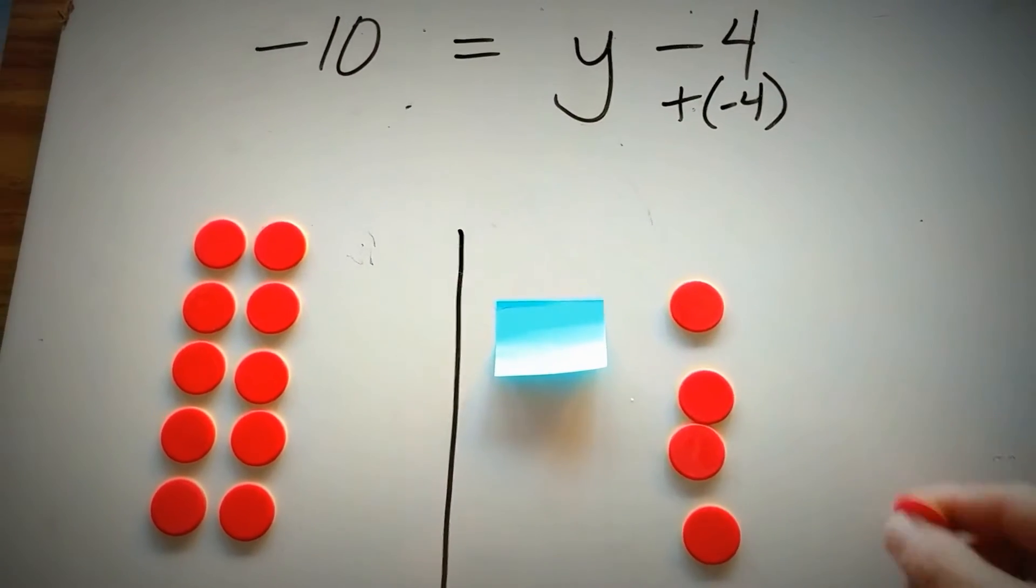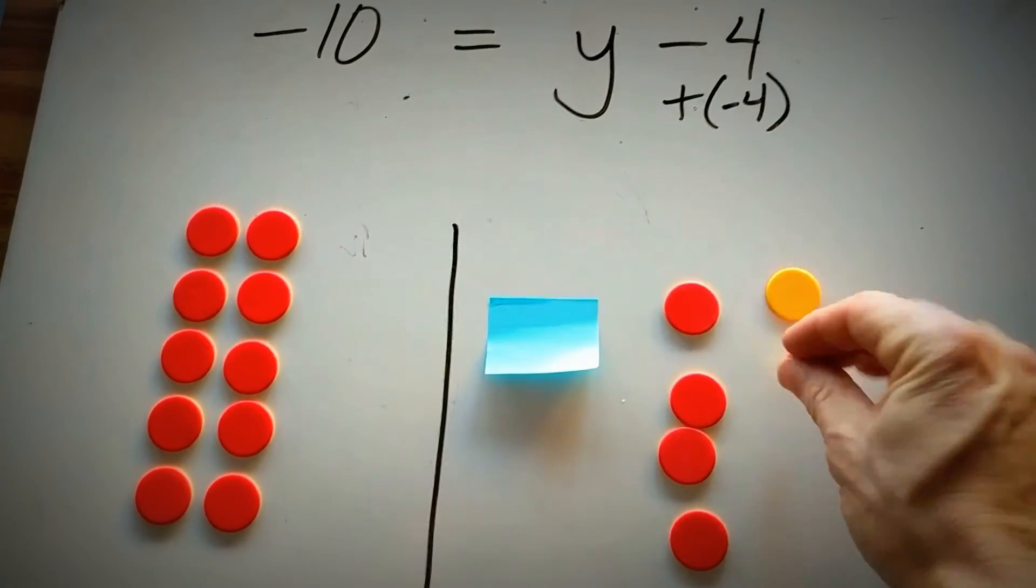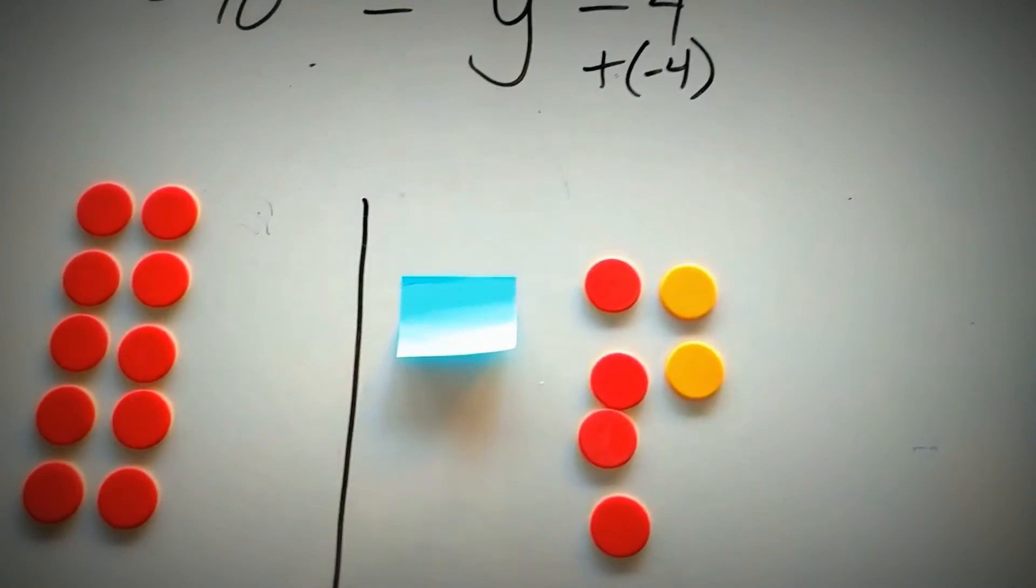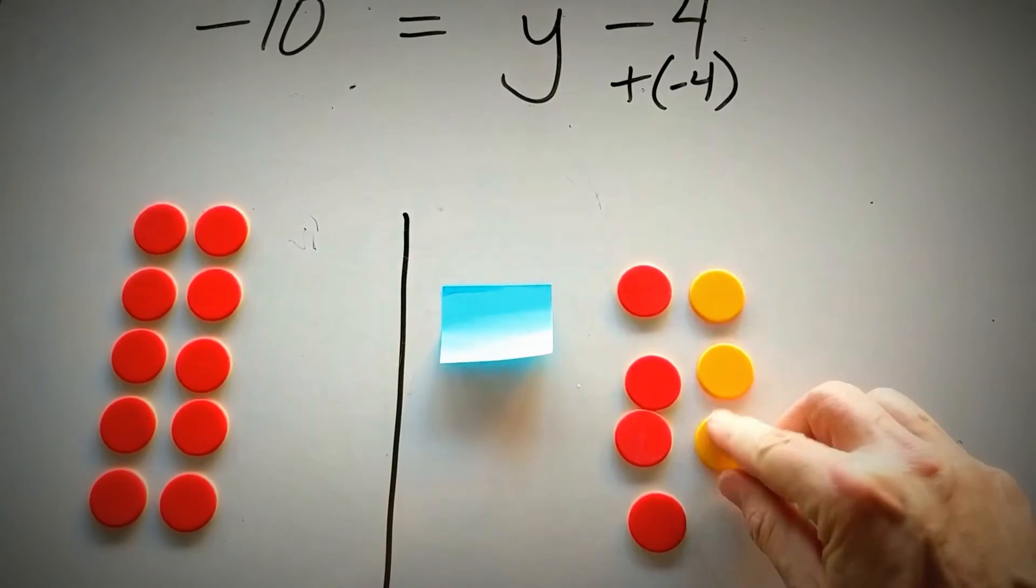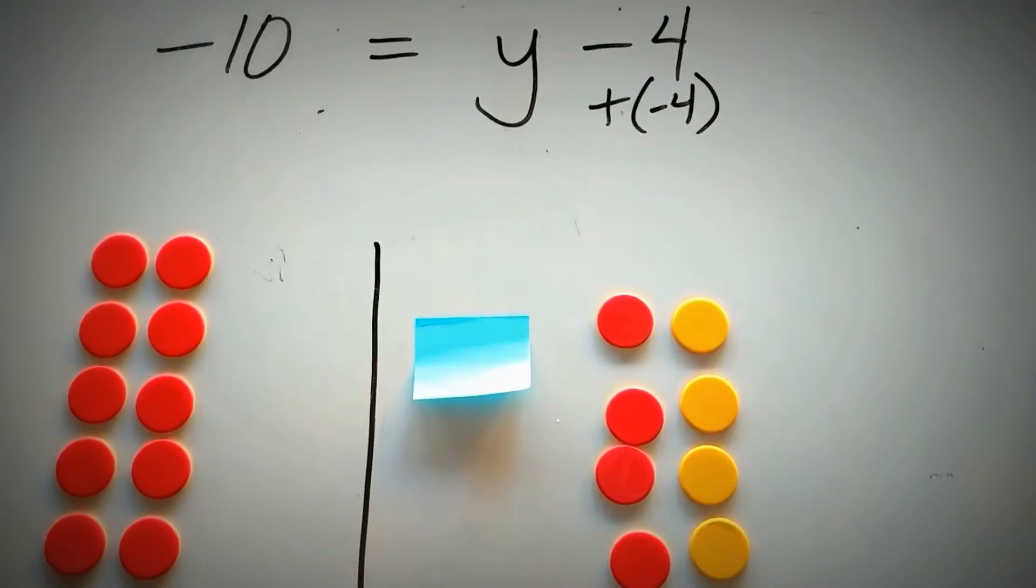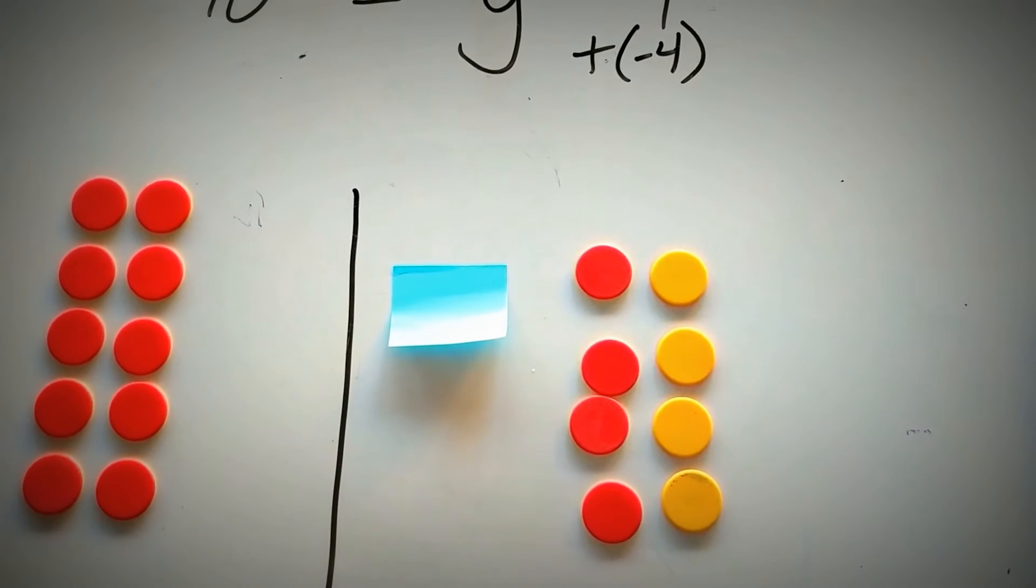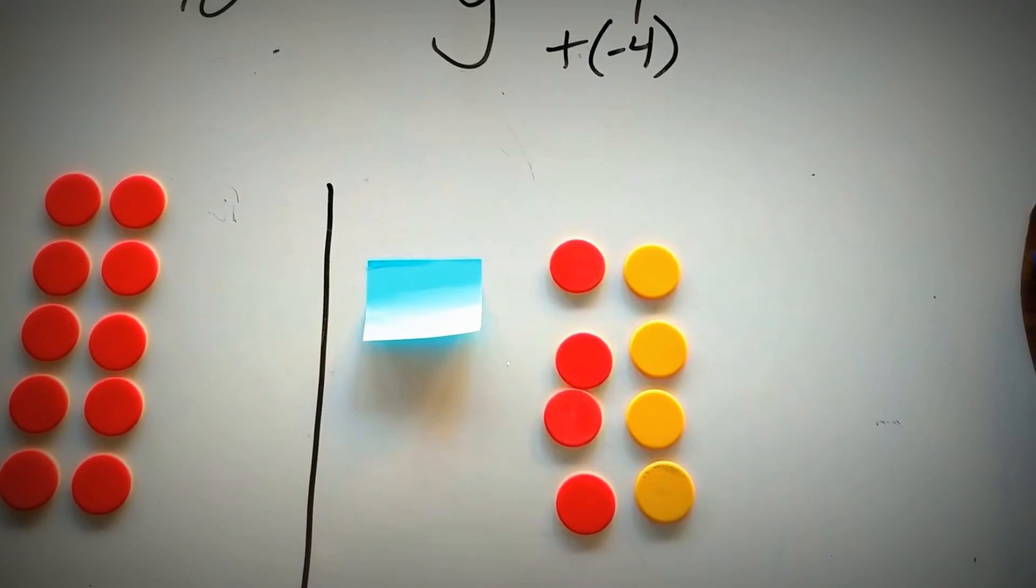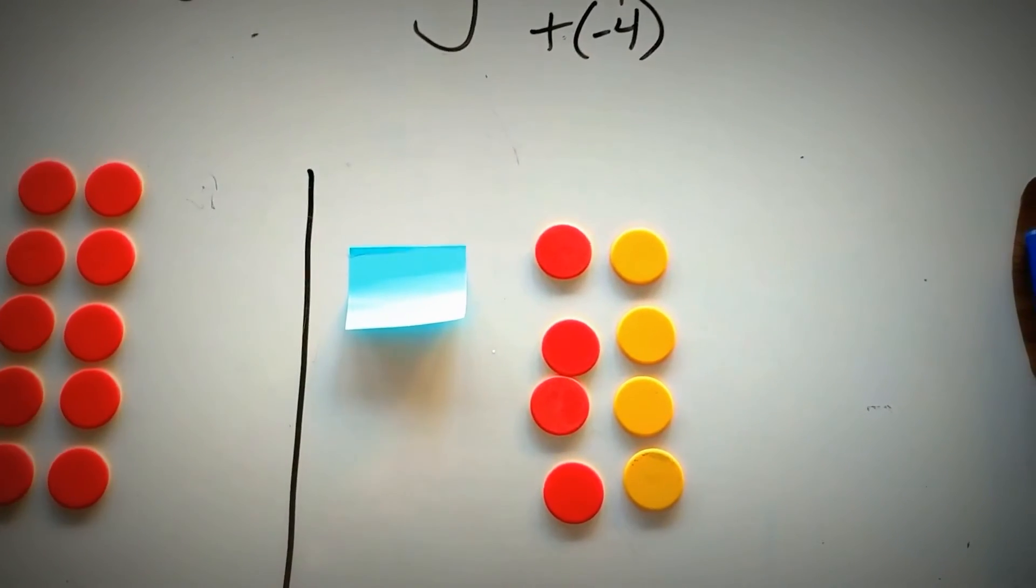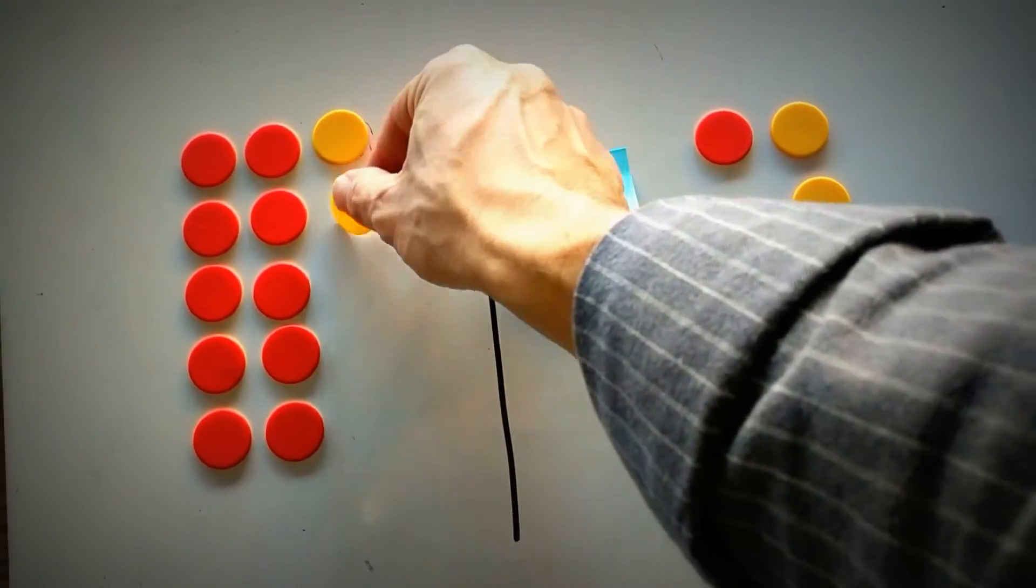Just like the previous example, I want to put in a positive set of counters for each negative on the side with my variable. So I put in plus 4 on my right-hand side, and I'm also going to do that on the left-hand side, plus 4.